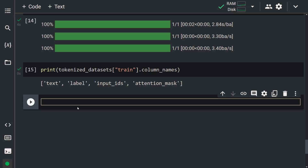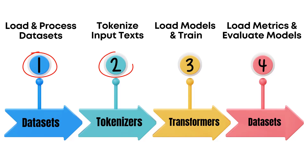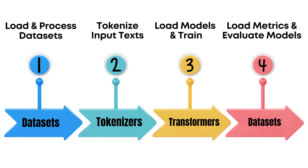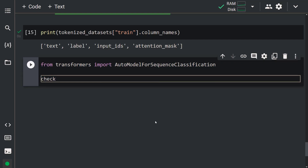We performed data pre-processing and are now ready to build the model. We loaded the dataset and processed it with the tokenizer. In this section, we'll cover how to build a model with the Transformers library. The model we'll use is DistilBERT, which is based on BERT — it is significantly smaller and more efficient. What we're going to do is fine-tune this model for our dataset. Let's import: from transformers import AutoModelForSequenceClassification. Let's set checkpoint = 'distilbert-base-uncased'.